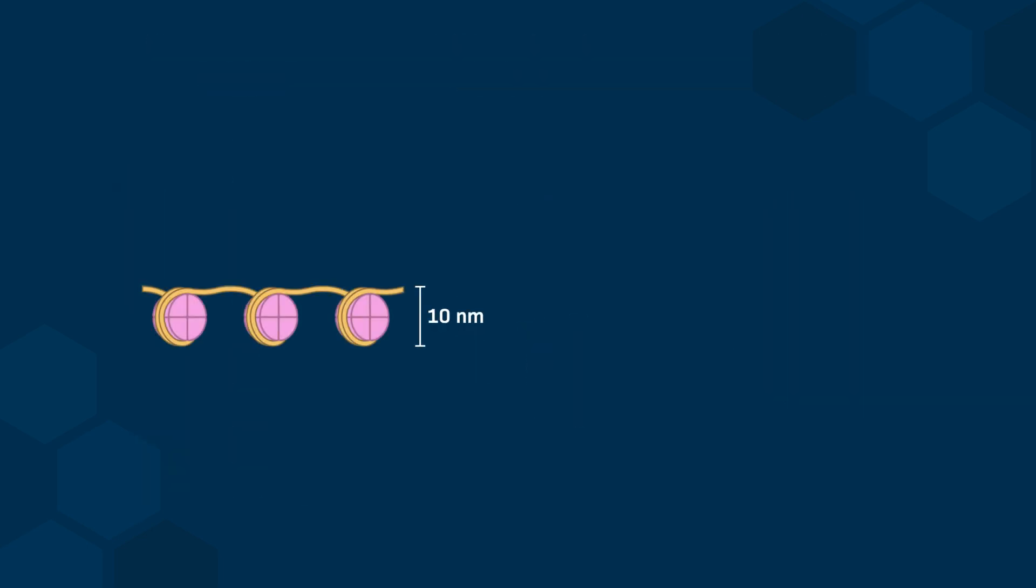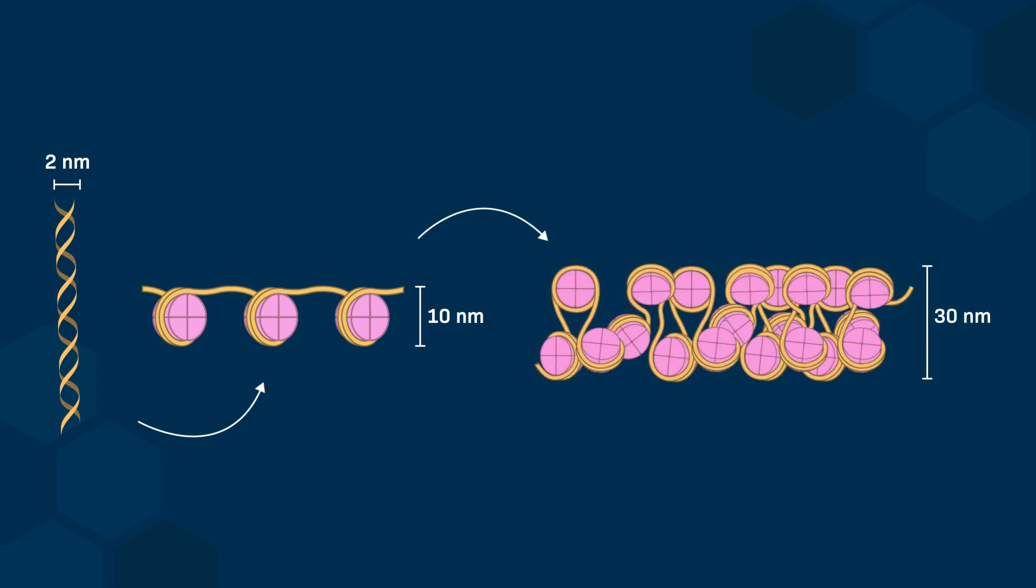The 10 nm chromatin fiber corresponds to DNA being wrapped around histone cores and can fold into a thicker chromatin fiber of about 30 nm in diameter. This is a result of internucleosome interactions and interactions between histone H1, which is found in the internucleosome regions.